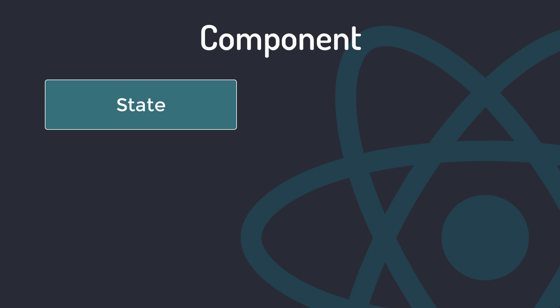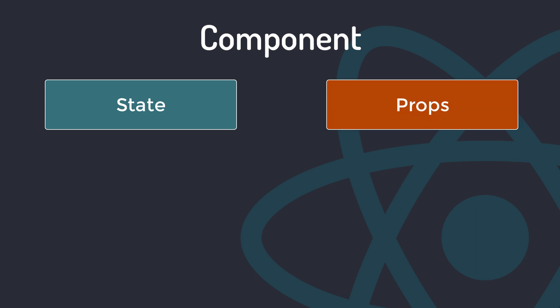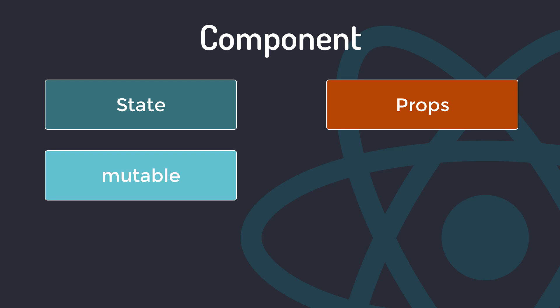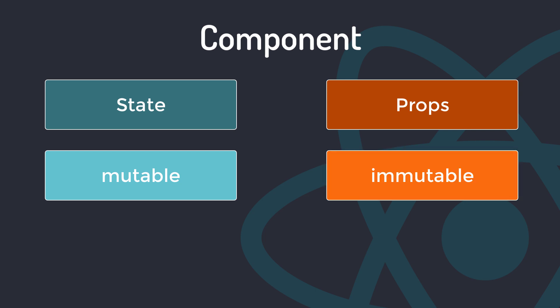There are two types of data — state and props — in React Native, which control the component. The component that uses the state is mutable; they can be changed later on if required. The props component is immutable and it's fixed throughout the lifetime.